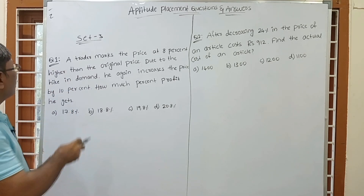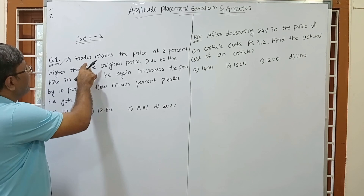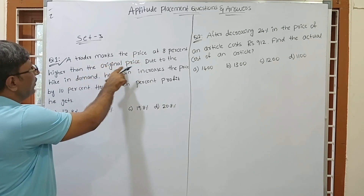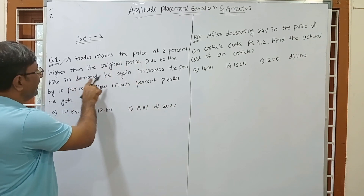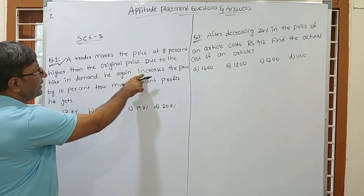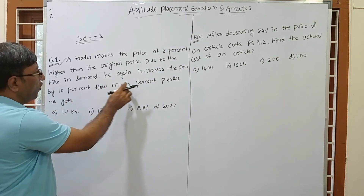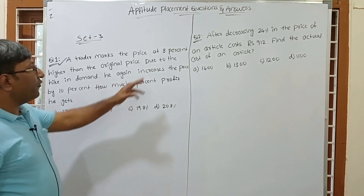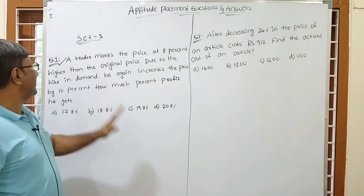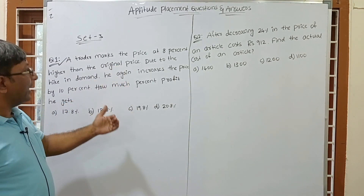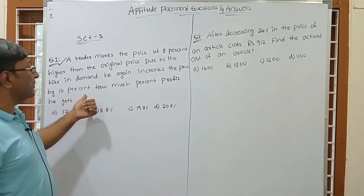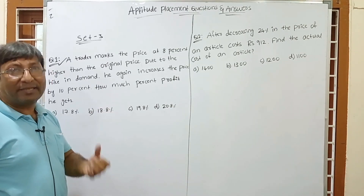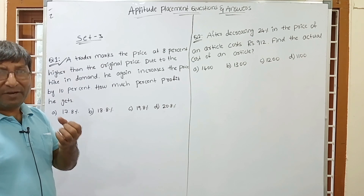The first question is: a trader marks the price at 8% higher than the original price. Due to the hike in demand, he again increases the price by 10%. So how much percent profit does the trader get? First he increases 8% from the original price, and after that he increases again by 10%.